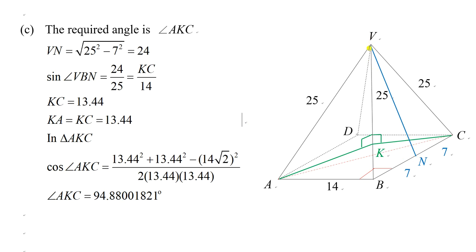Now if we find the length of VN, then we can find sine angle VBN. Why do we need to find sine angle VBN? Because you can use triangle BCK to find the length of KC. We can use the right angle triangle: square root of (25 squared minus 7 squared) and take the square root. So the blue line is 24.